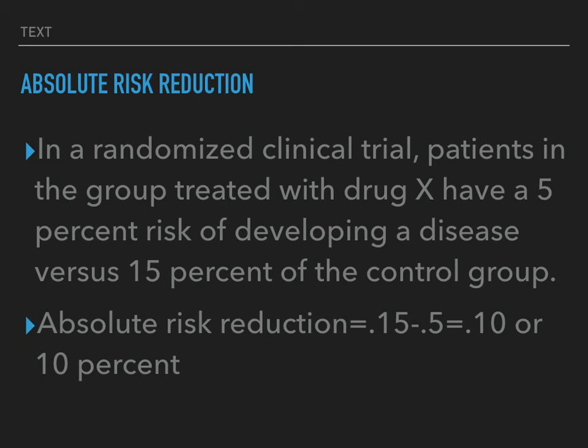In a randomized clinical control trial, patients in a group treated with drug X have a 5% risk of developing disease versus 15% of the control group. So the absolute risk reduction is 0.15 for the 15% that developed disease in the control group, minus 0.05 who developed disease in the treatment group. You get 0.10, or 10%. So the absolute risk reduction is 10%.